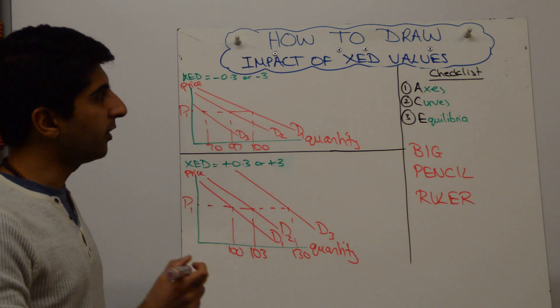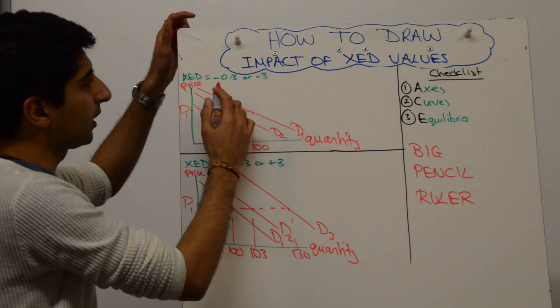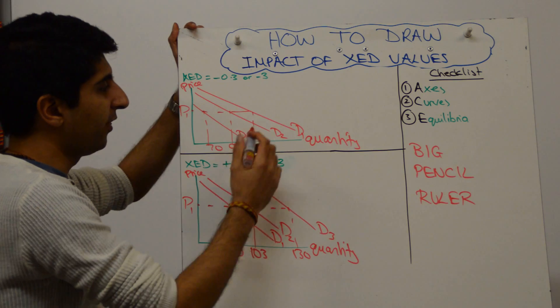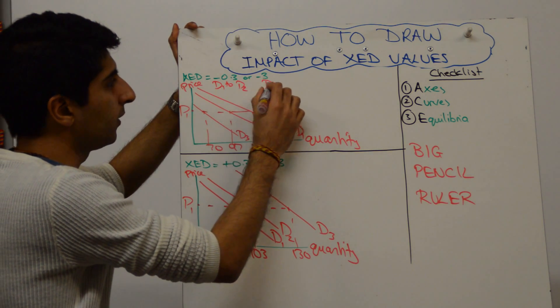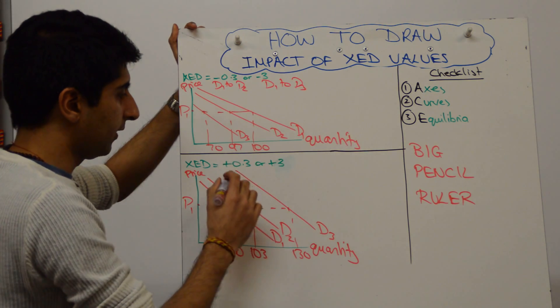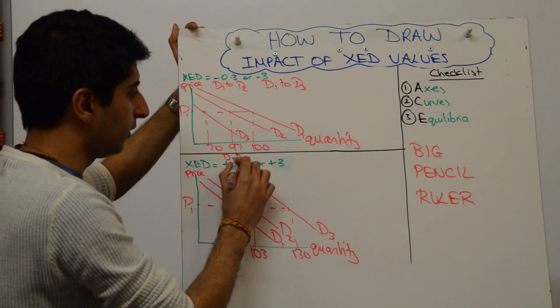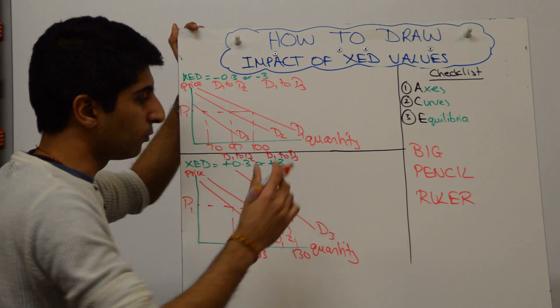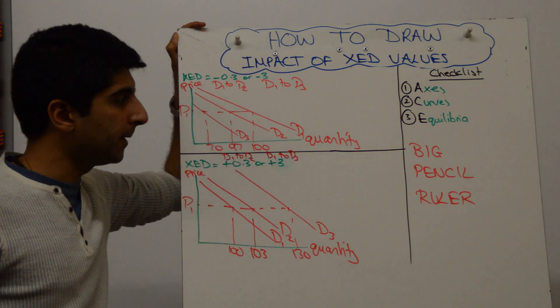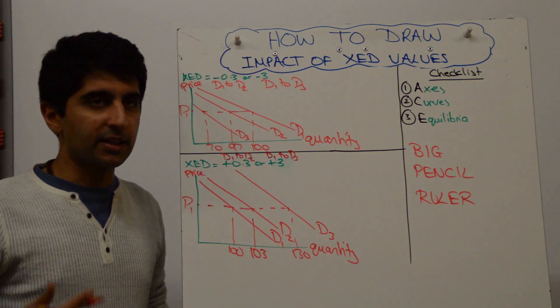If you're really being clever, you can say, look, for minus 0.3, that is the shift from D1 to D2, so you can make that clear. This one is the shift from D1 to D3. Let me do the same here. So this one is D1 to D2, and this one is D1 to D3. So just make it really clear to the examiner you know what you're doing. So a simple technique there to follow.